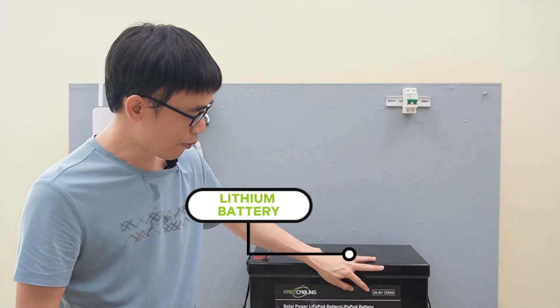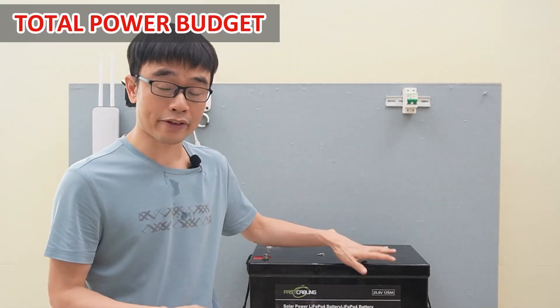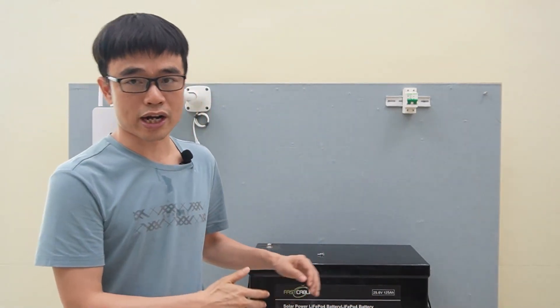This lithium battery outputs DC 25.6V, it is 125 Ah. With these two parameters, we can calculate the total power budget this battery can provide with a full charge, and how long it can keep these two devices running before we need to swap or recharge the battery.